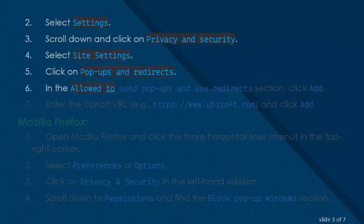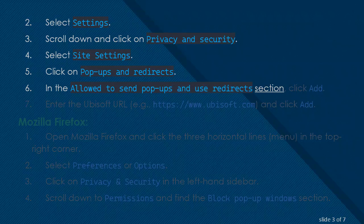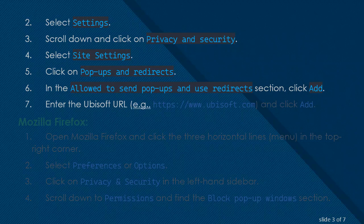In the Allowed to Send Pop-Ups and Use Redirects section, click Add. Enter the Ubisoft URL — for example, https://www.ubisoft.com — and click Add.